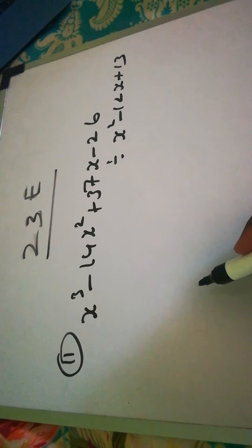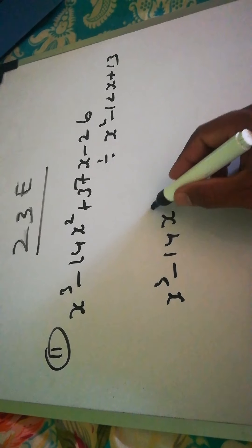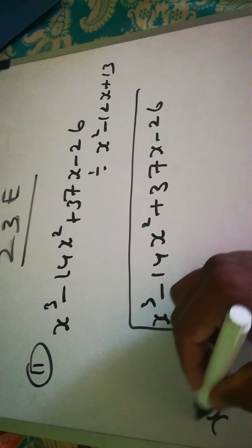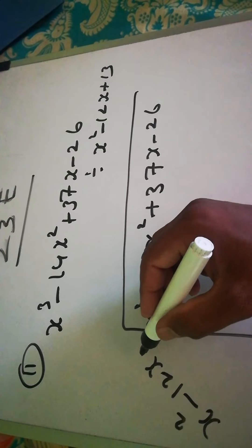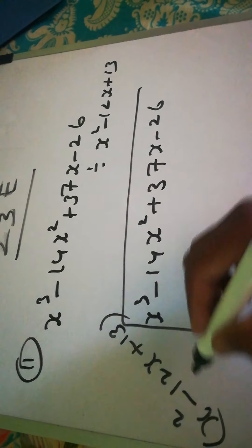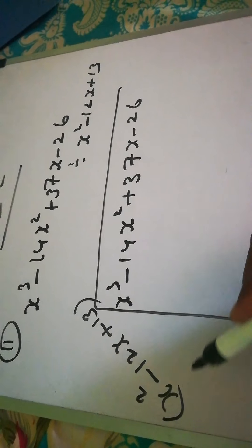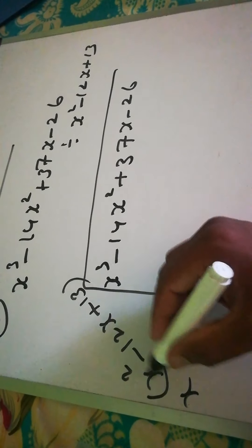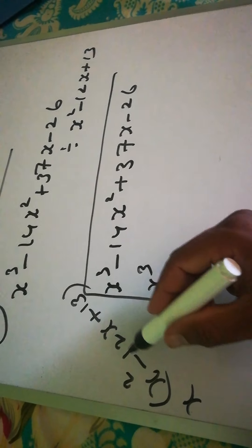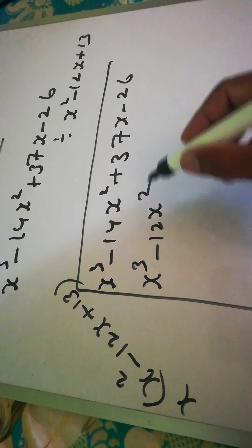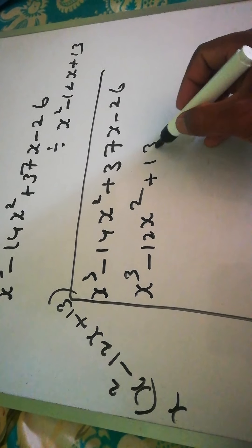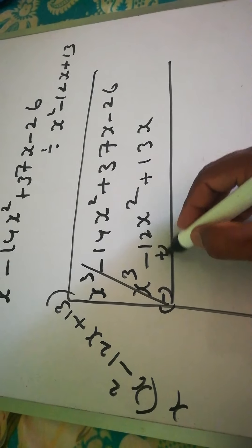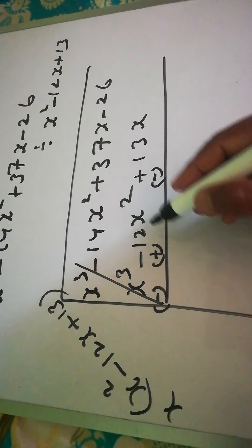Next question: divide 2x³ - 14x² + 37x - 26 by x² - 12x + 13. To get x³ here we multiply by x: x into x² is x³, x into -12 is -12x², and x into 13 is 13x. Now change the sign — here it becomes minus.